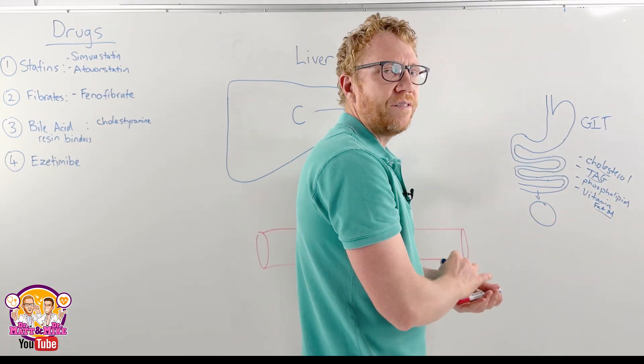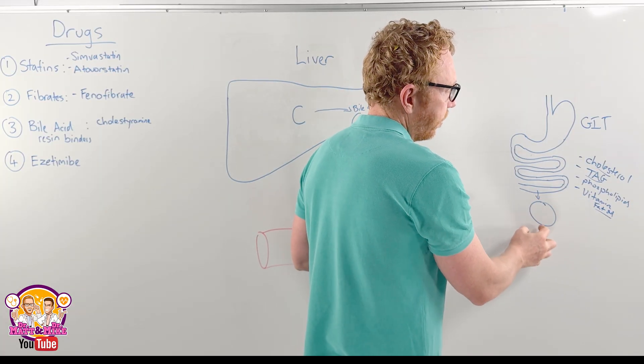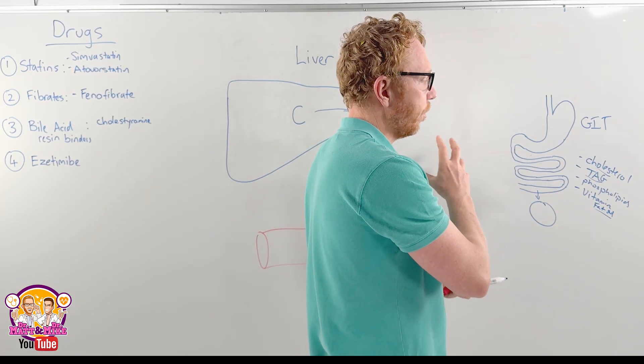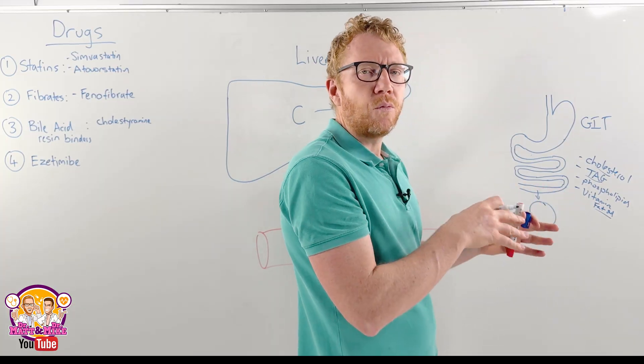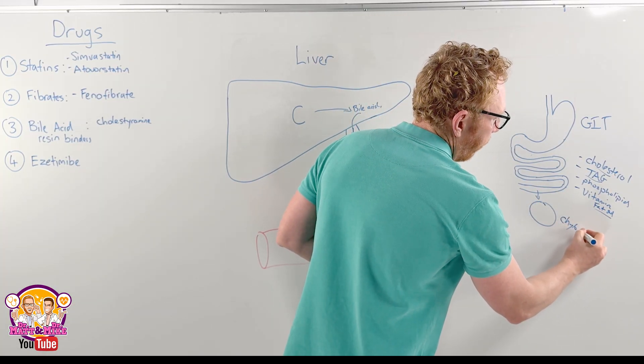They'll get transported across the membrane into a large droplet which has phospholipids on the outside including proteins, lipoproteins, and inside is a combination of triglycerides and cholesterol including the fat-soluble vitamins. This is known as a chylomicron.